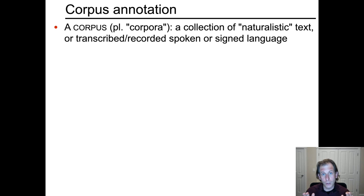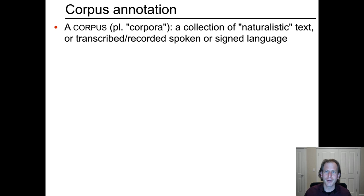We do this by corpus annotation. A corpus is a collection of naturalistic text or transcribed or recorded spoken or signed language. By naturalistic, we mean that it's not created by the researcher through introspective purposes. A corpus is language that's used for its own purposes, usually to communicate with somebody — to speak to somebody or write something down for an audience. Language in the wild.